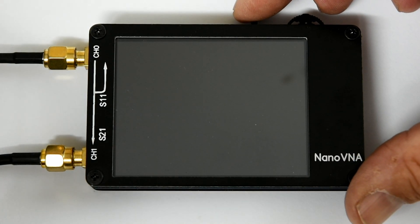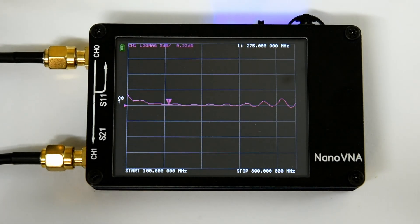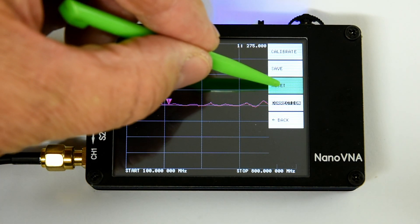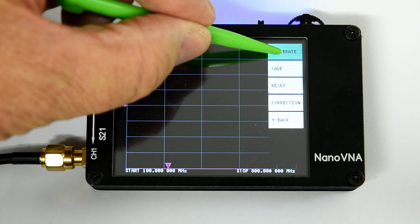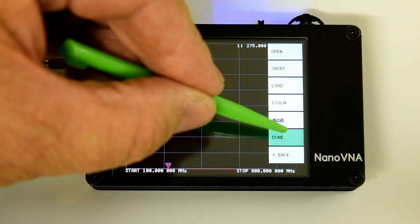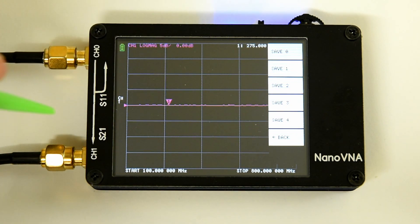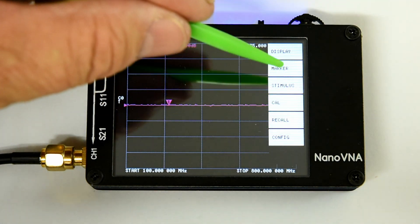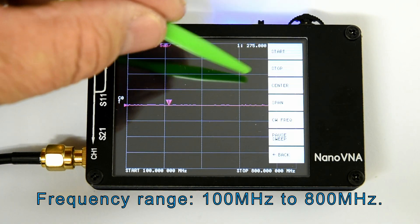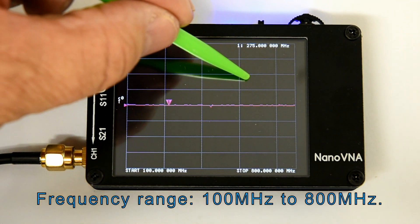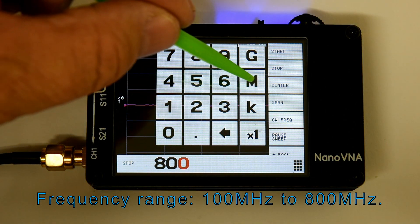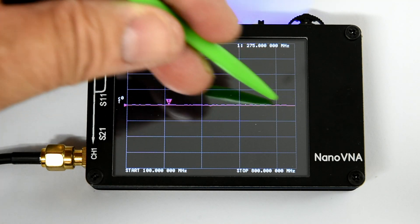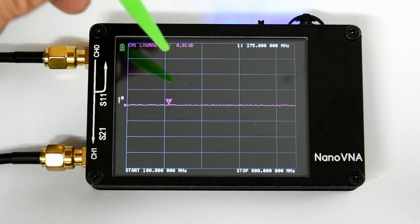We've got the line looped through for calibration. Set the frequency range to start 100 megahertz. Stop 800 megahertz. So that's pretty successful. We've got the zero dB line reasonably flat from 100 megahertz to 800.